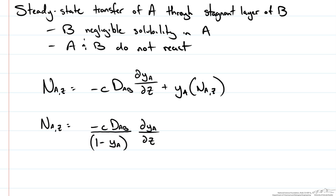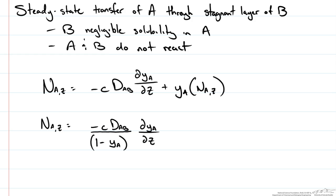If we assume no accumulation of A in our film space with time, that the concentration is constant and the diffusion coefficient is not a function of concentration, then we can integrate this. We're going to bring our DZ term over to the left side. Since our concentration and our diffusivity is constant, we bring it out of our integral and we'll have DYA over 1 minus YA.